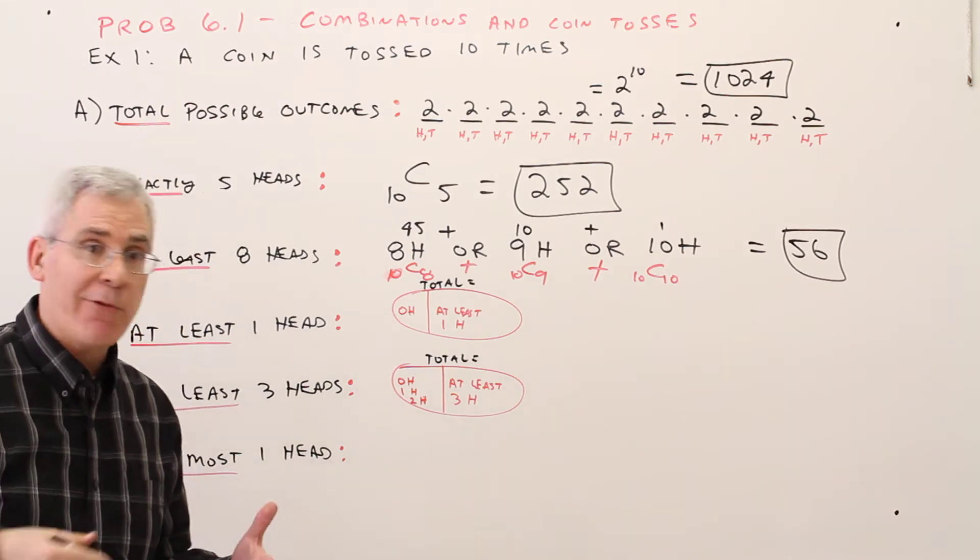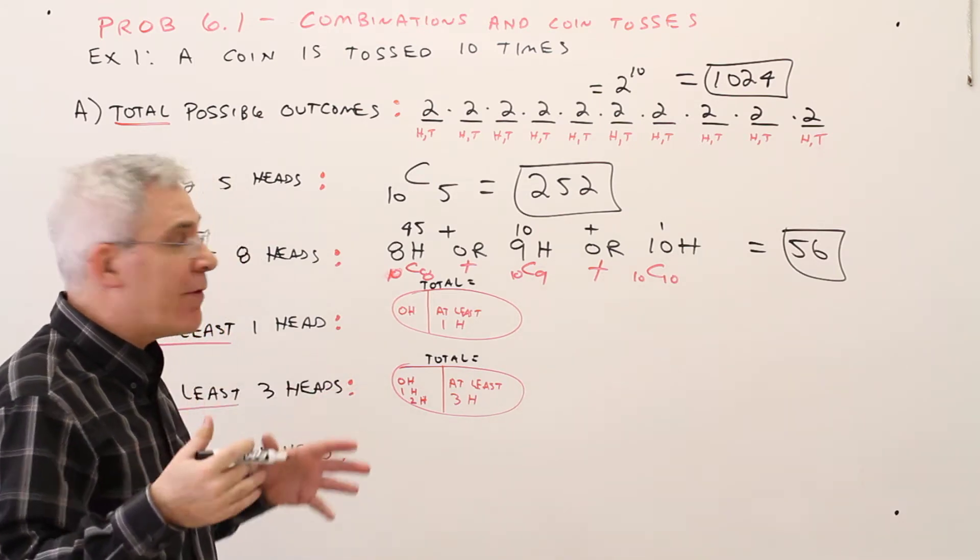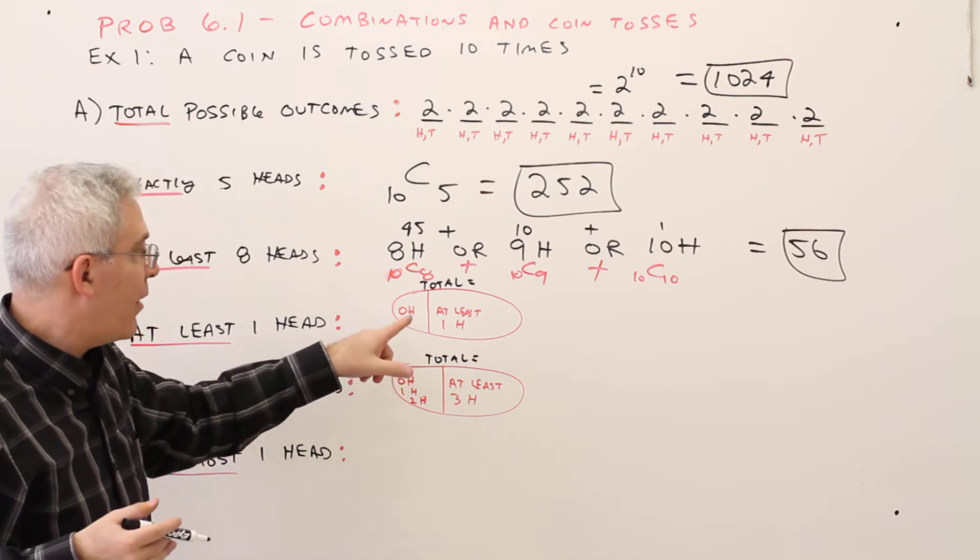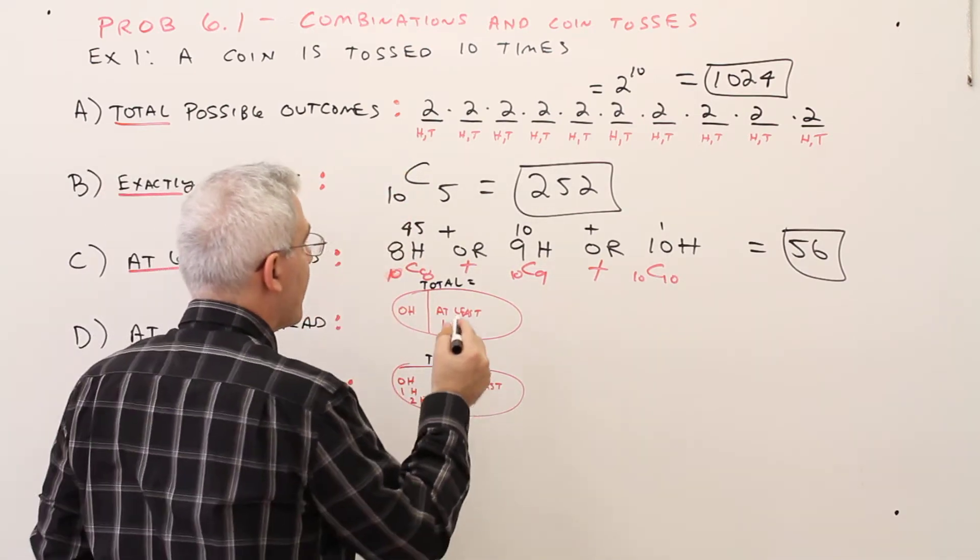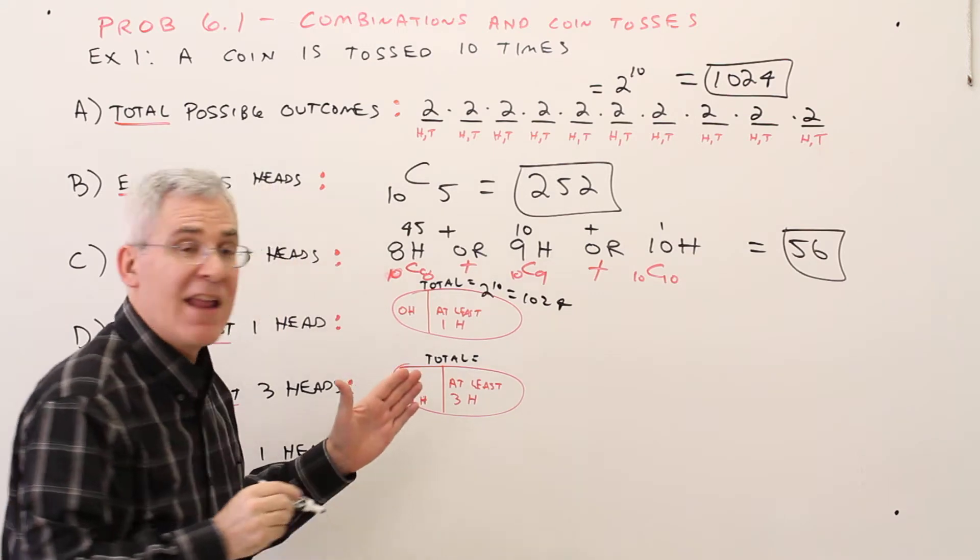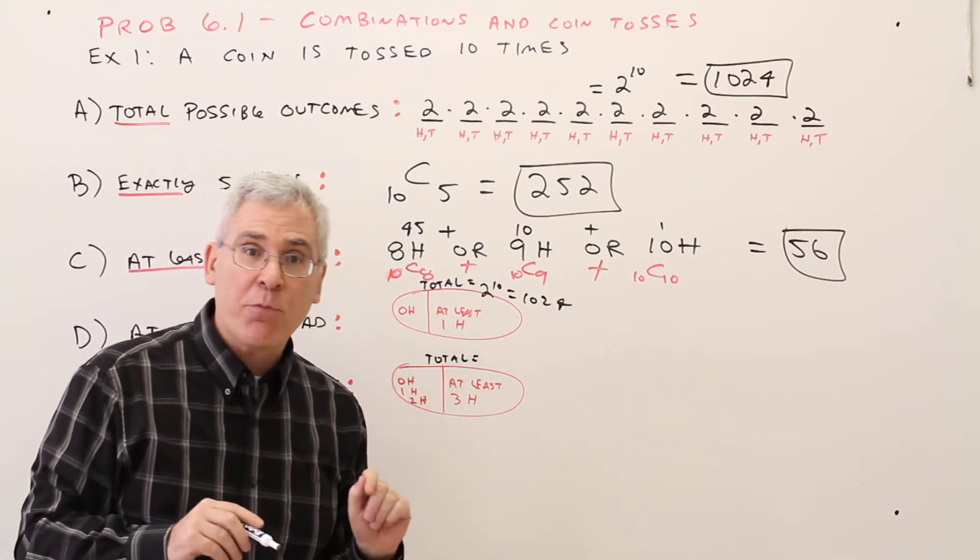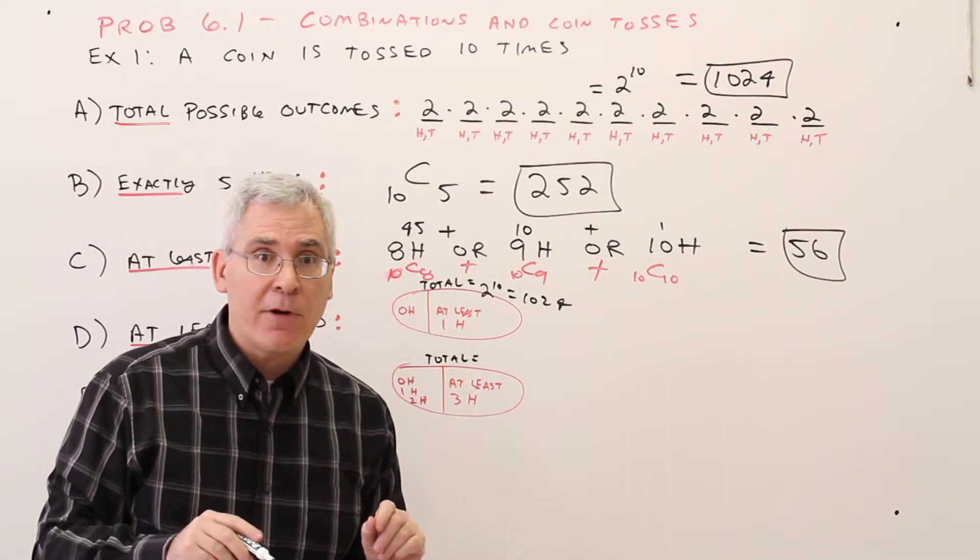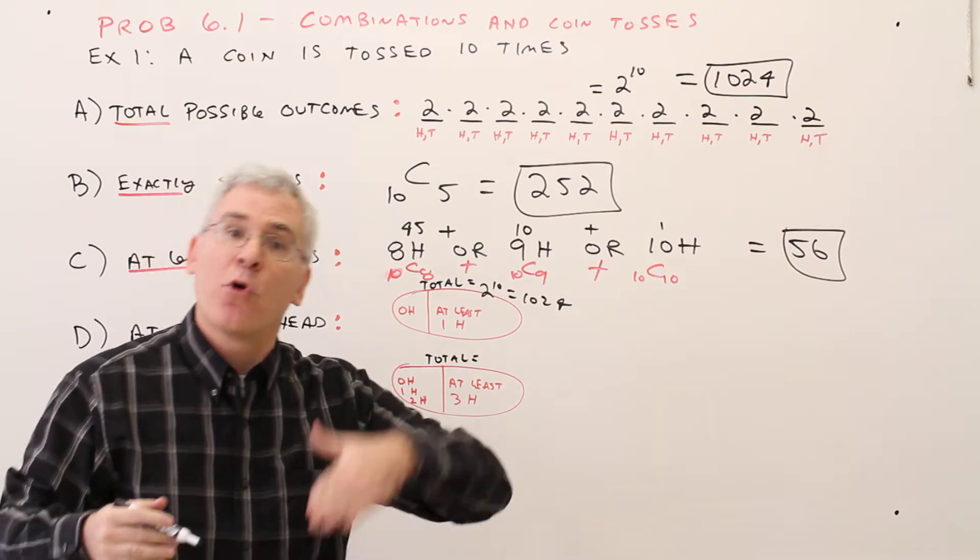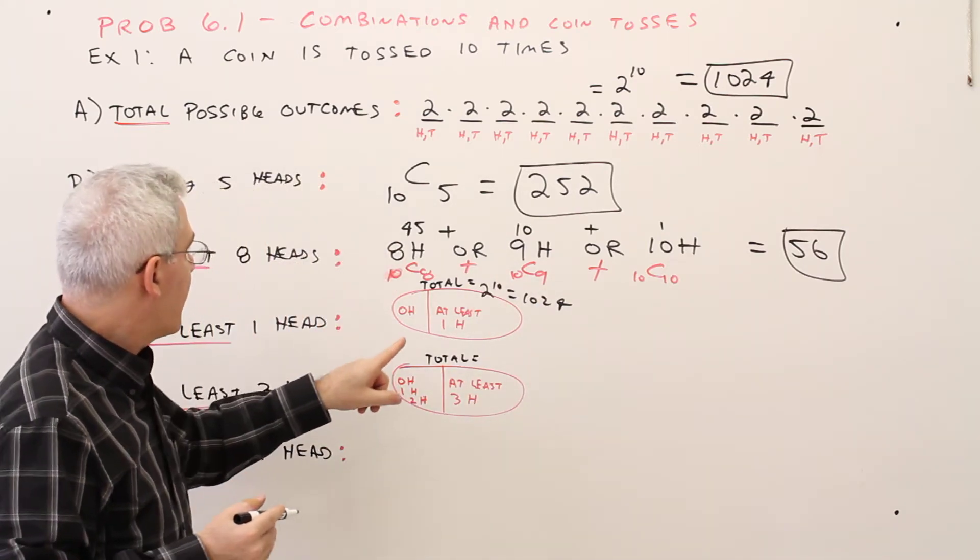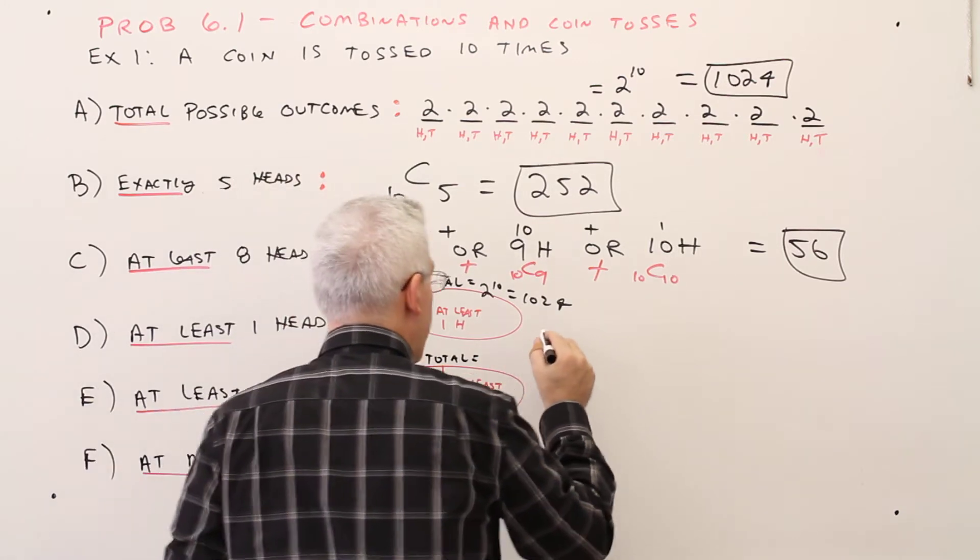Part D. This one's going to be a recurring theme all probability unit. At least 1. So whenever we say at least 1 of an object, what we can do is draw a little set here. Again, we've done this before. I've got the total number of ways was 2 to the 10th equals 1024, and I can split it up into two partitions. The ways with no heads or the ways with at least 1 head. Either you're going to have at least 1 of something or none of something. Either it's going to rain at least a little bit or not at all.